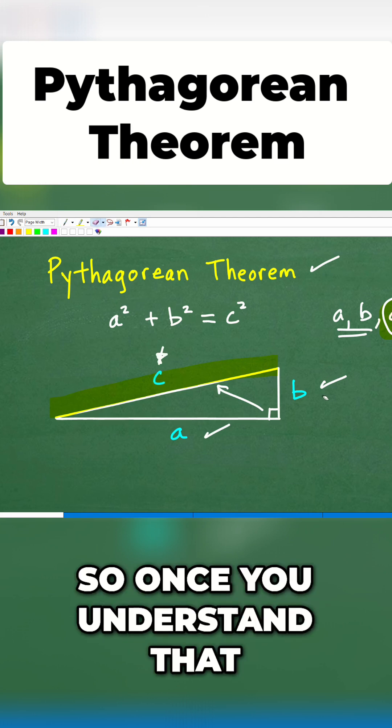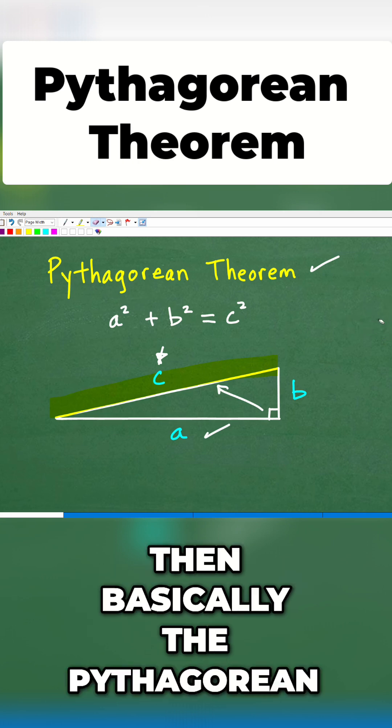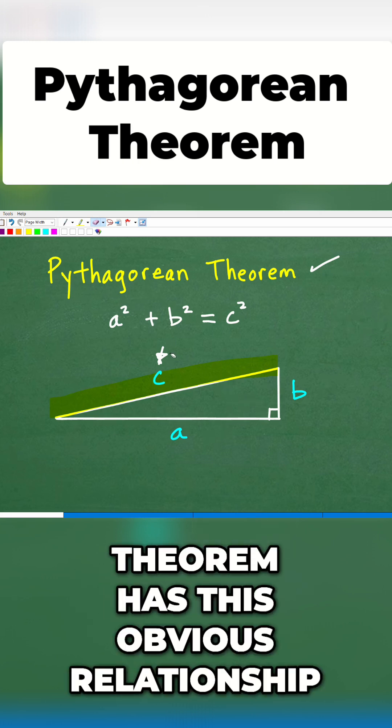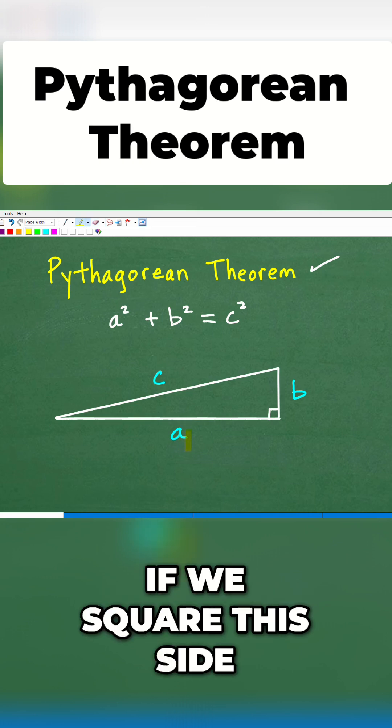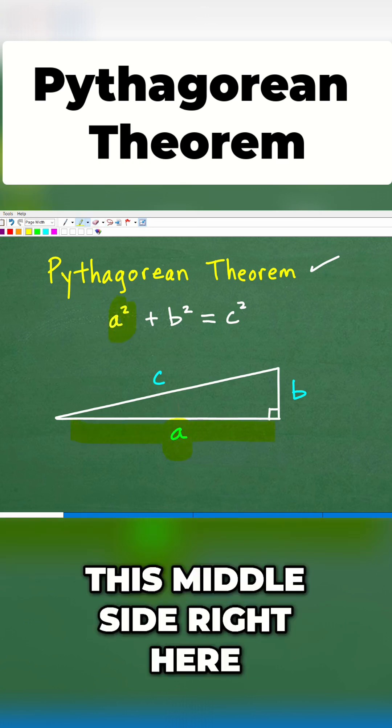So once you understand that, then basically the Pythagorean theorem has this obvious relationship, and that is this. If we square this side, okay, this middle side right here, A squared,